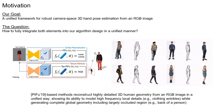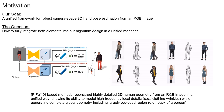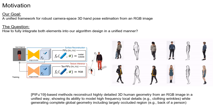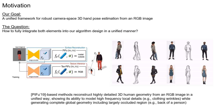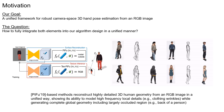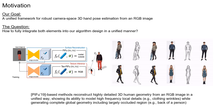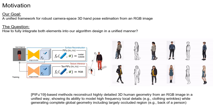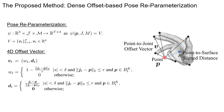To fully integrate both elements into our algorithm design in a unified manner, we connect with pixel-aligned implicit function, PIFu. Through direct dense modeling in the 3D domain with pixel-aligned local features, PIFu-based methods reconstruct highly detailed 3D human geometry from an RGB image in a unified way, showing the ability to model high-frequency local details such as clothing wrinkles while generating complete global geometry including largely occluded regions. Inspired by these results, we propose a novel unified 3D dense regression scheme based on a 3D implicit function for robust camera space 3D hand pose estimation.